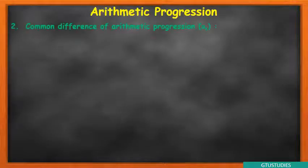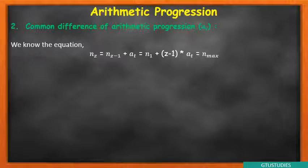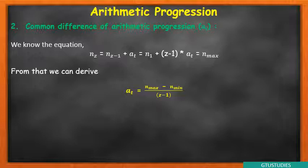To find the common difference AT of arithmetic progression, we use the last equation. N maximum equals N minimum plus Z minus 1 times AT. Solving for AT, we get AT equals N max minus N minimum divided by Z minus 1. This equation is very simple to find the common difference.